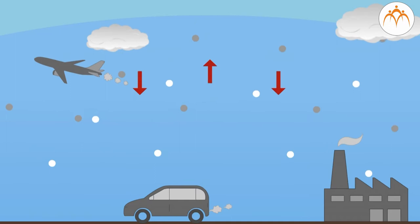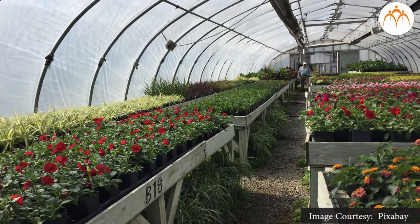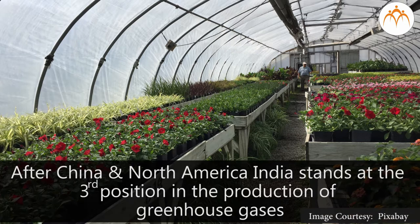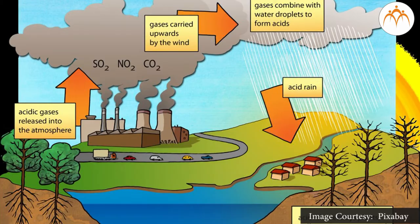If greenhouse gases would not have been there, then temperature would be at minus 18 degrees Celsius. For a human being to survive, a temperature of 15 degrees Celsius is required. After China and North America, India stands at the third position in the production of greenhouse gases.